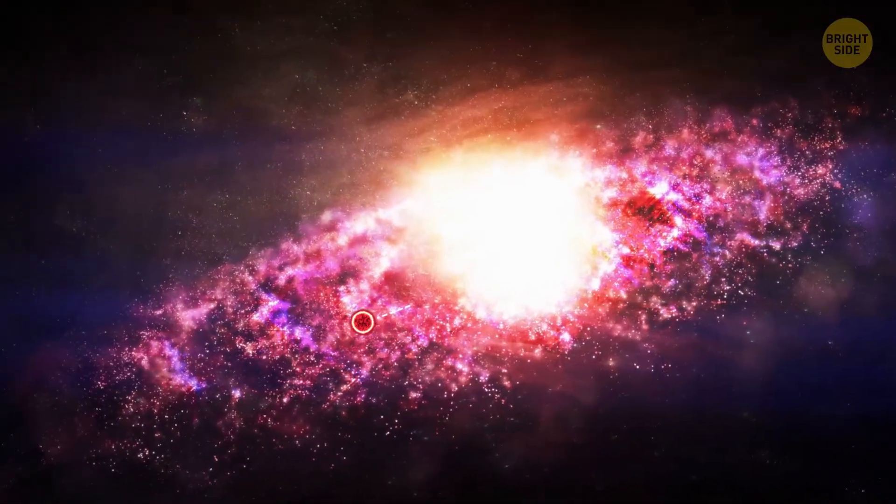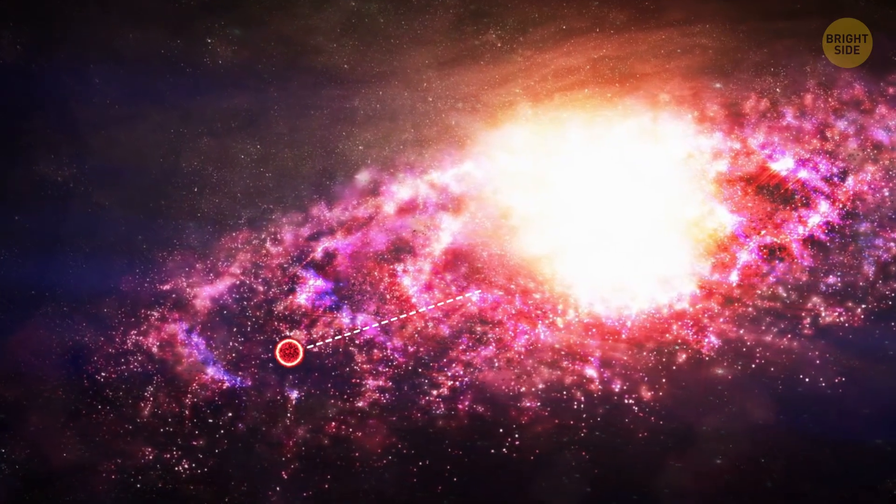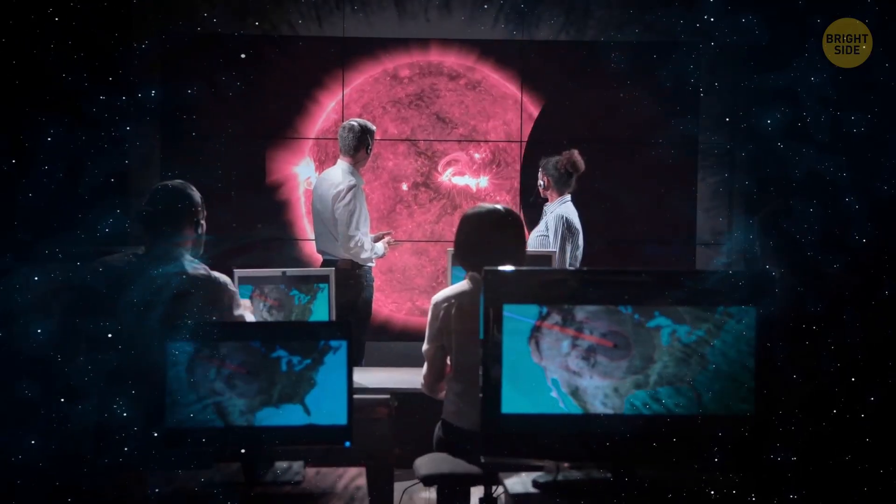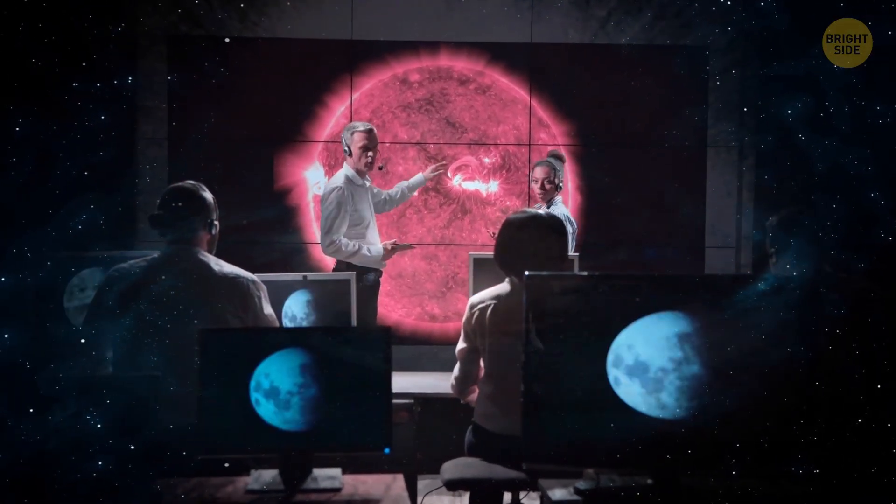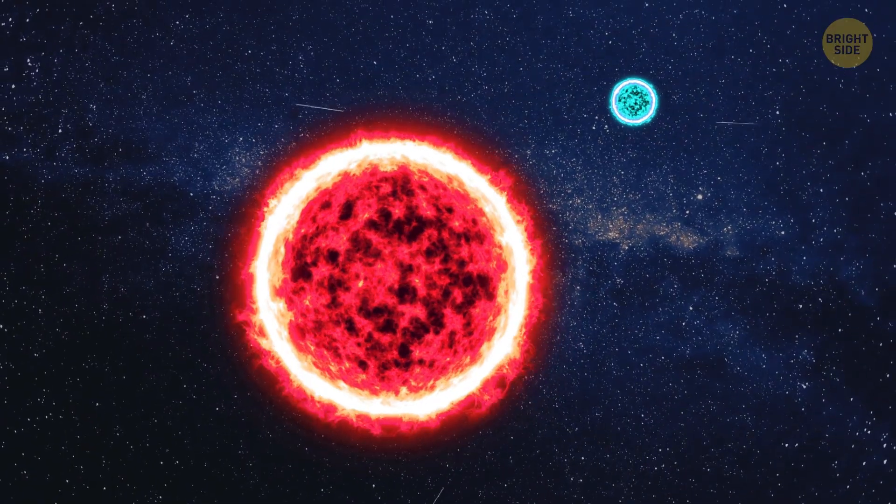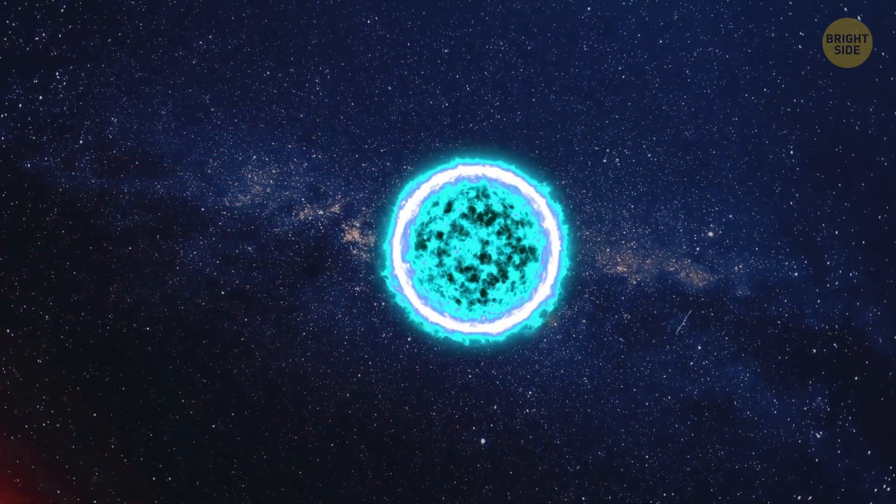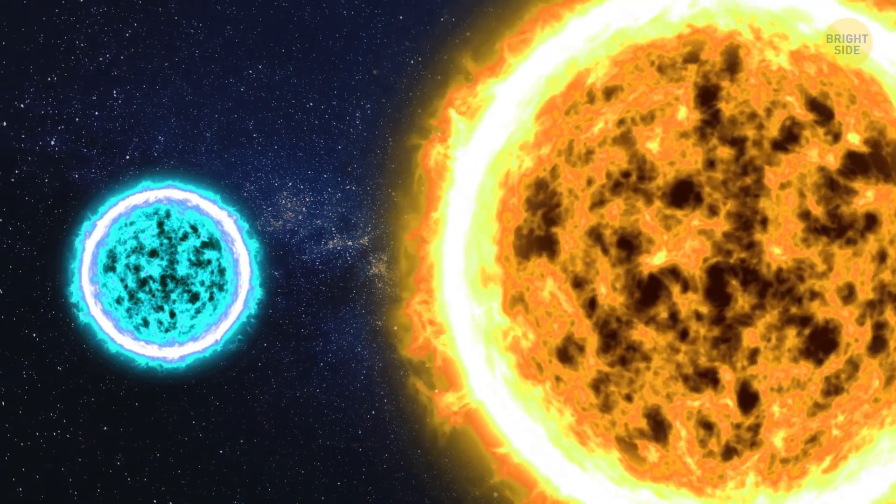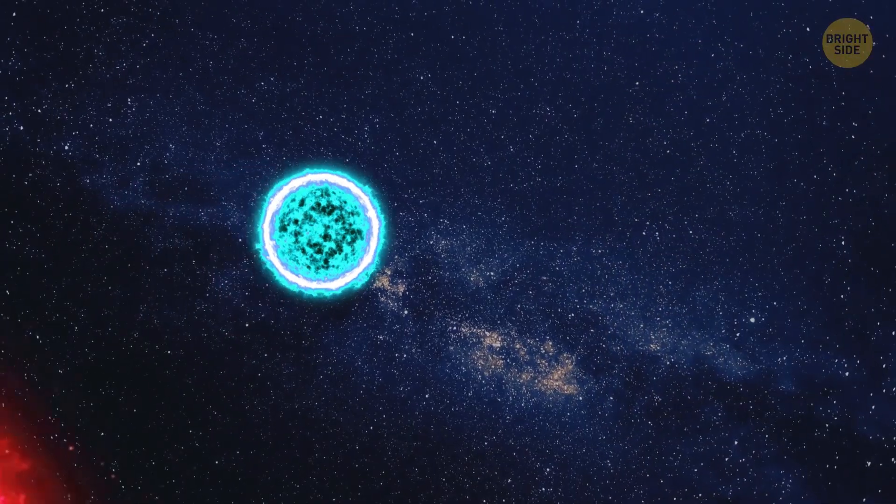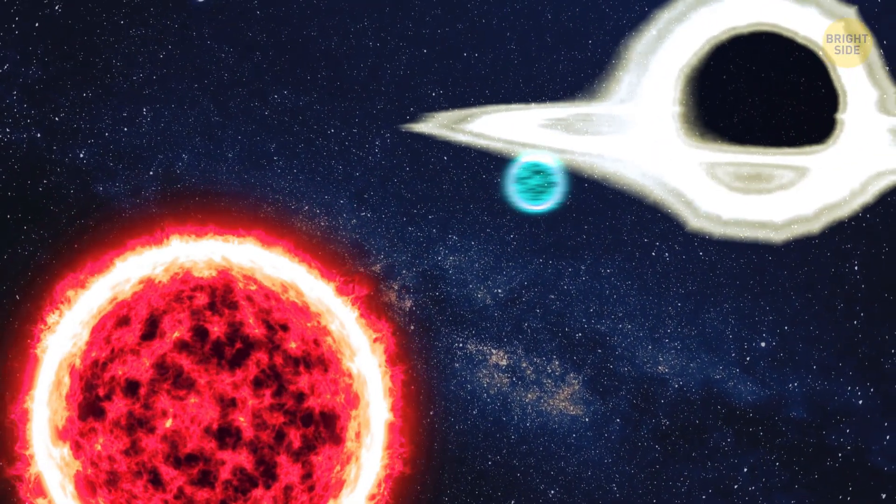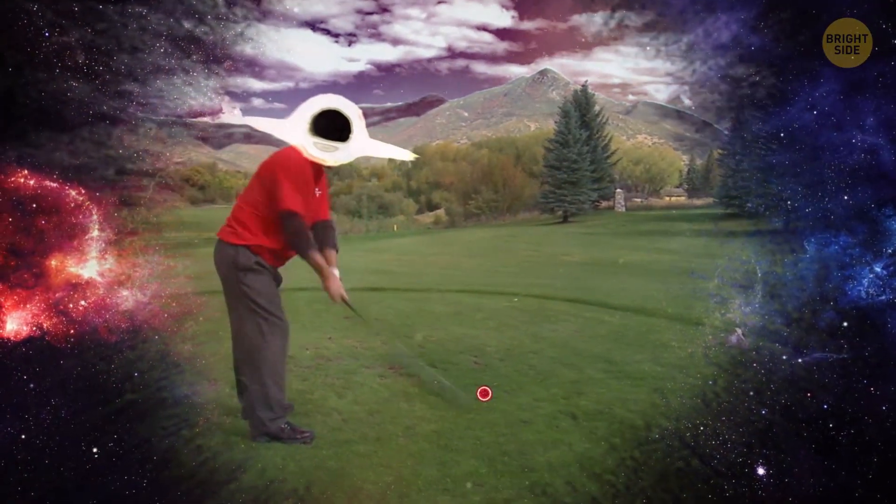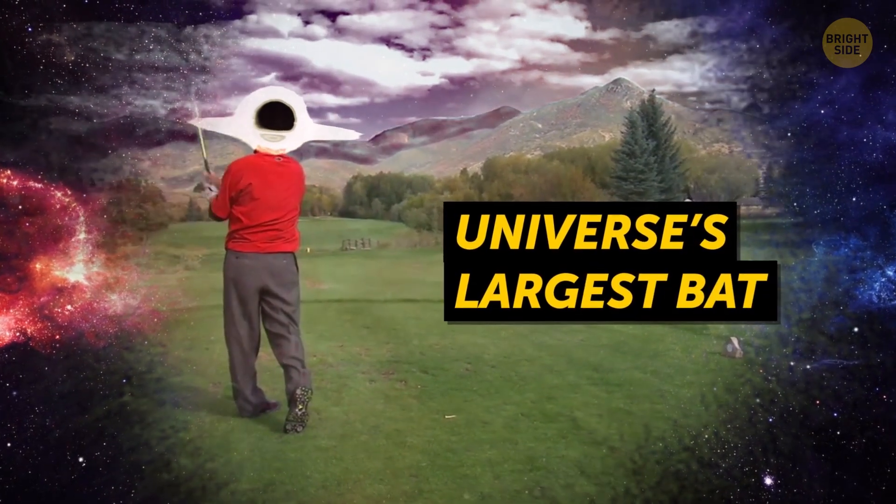That makes speedy the first confirmed object to be ejected from our galaxy's core. This is an important discovery, as it fills in a crucial missing piece toward understanding how our galaxy works. Before being batted across the universe, speedy would have been paired with a second, much smaller star. This star would have been significantly less massive than the Sun, and was most likely absorbed into the black hole during the catastrophic disruption of its orbit. As for how exactly speedy found itself swatted across the galaxy by the universe's largest bat, astronomers have two competing theories.